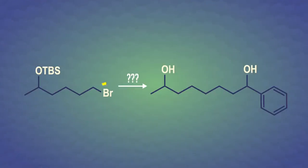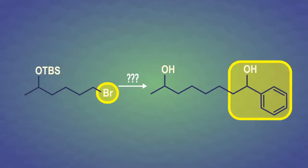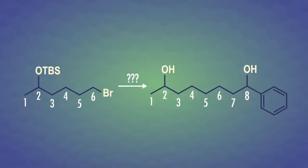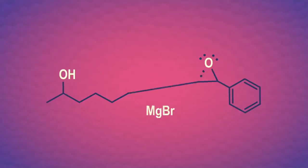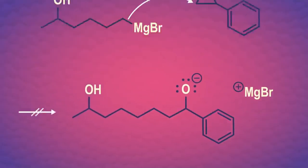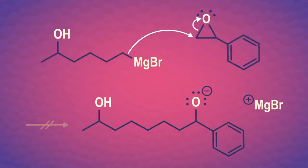We want to remove the bromo functional group on the right-hand side of the starting material and replace it with an additional alcohol and phenyl group. Let's start by comparing the number of carbons in our starting material and product to see where we need to form a bond. If we can transform our starting reagent into a Grignard, we could hypothetically use it to join onto an epoxide like we learned in episode 24. But wait, there's a problem!